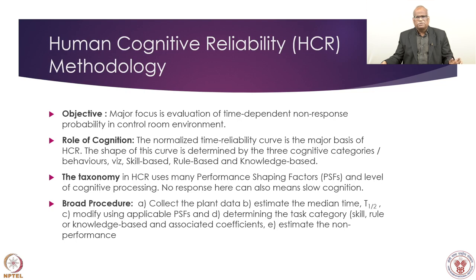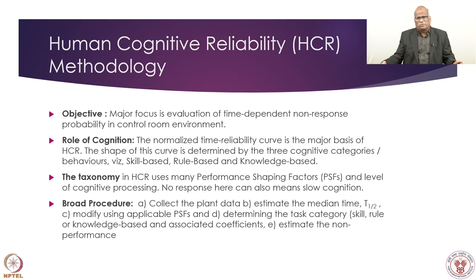The role of cognition has been modeled; there is a standard mathematical model and standard lookup tables. These give coefficients for various types of jobs: skill-based, rule-based, and knowledge-based tasks. Other characterization includes what kind of control room is there, what modern systems are available, how information is presented to the operator, and what different support systems are available. These are called performance shaping factors in conventional terms, but here they are parameters of the model. The taxonomy in HCR uses performance shaping factors and level of cognitive processing.